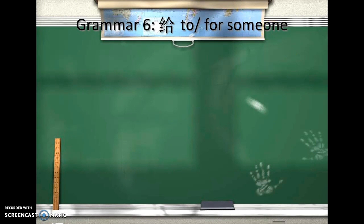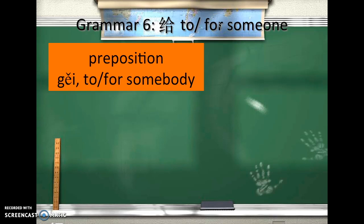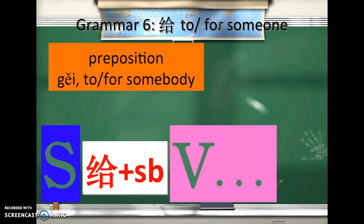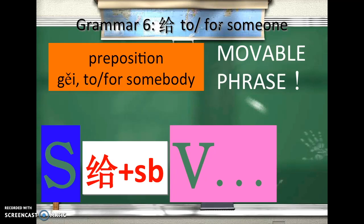Grammar 6: 给 means 'to' or 'for' someone — it's a preposition. The structure is: subject + 给 + somebody + do something, meaning you do something to someone or for someone. It's a movable phrase — it can also be put at the end of the sentence, after the verb.